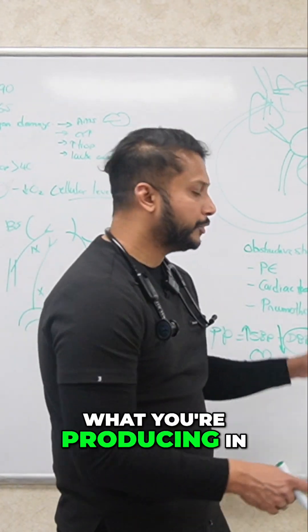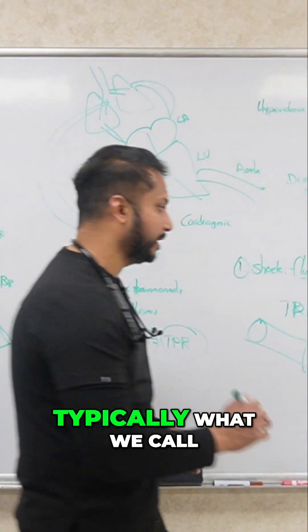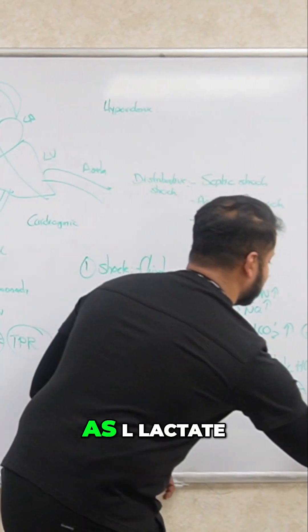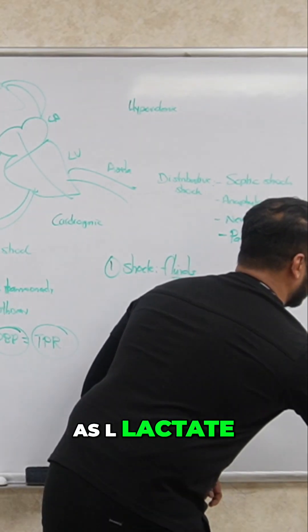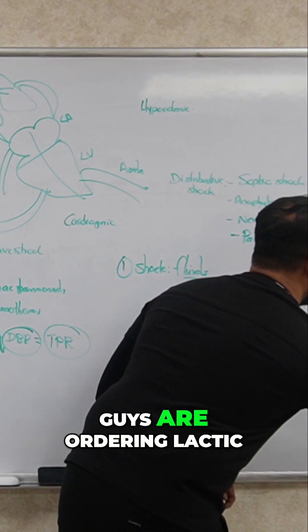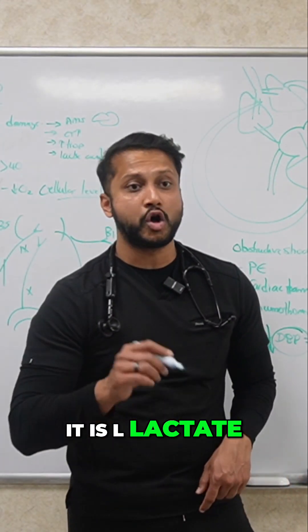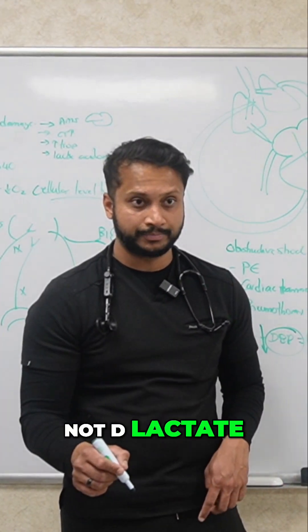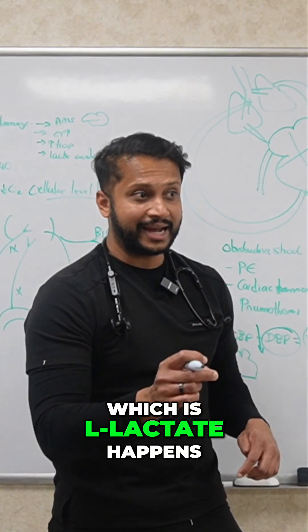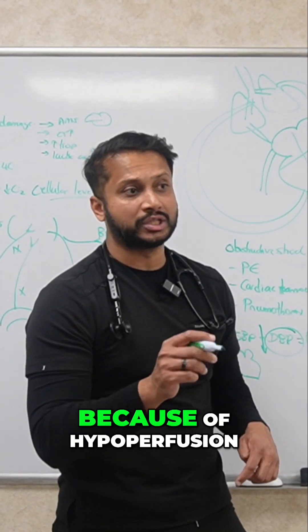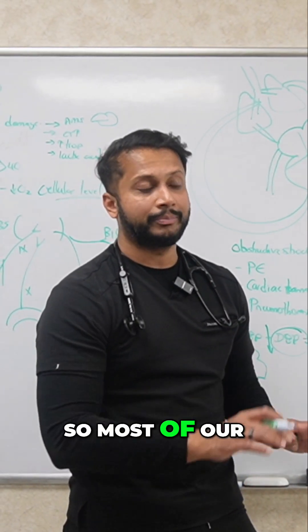What we produce in a normal patient — what we check for — is typically what we call L-lactate. Every time you're ordering lactic acid on the computer, it is L-lactate, not D-lactate. Type A lactic acidosis, which is L-lactate, happens because of hypoperfusion.